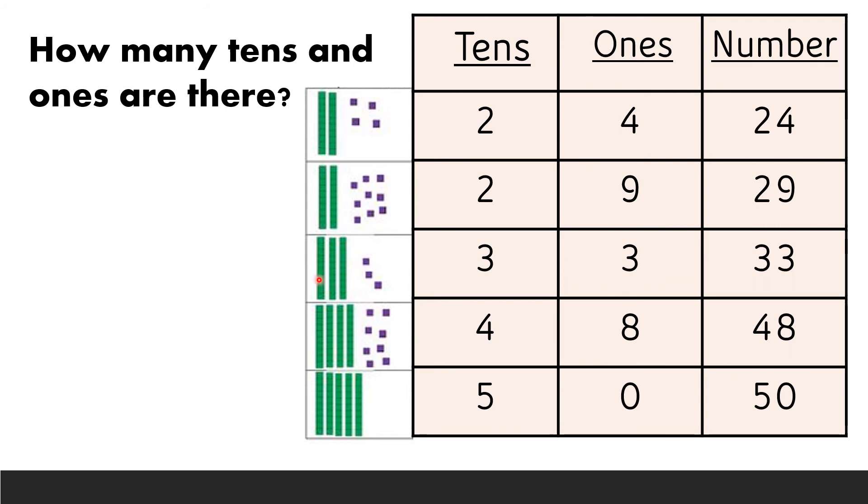The next we have 1, 2, 3. Three tens. And how many ones? 1, 2, 3. Three ones. So, the number will be 33.